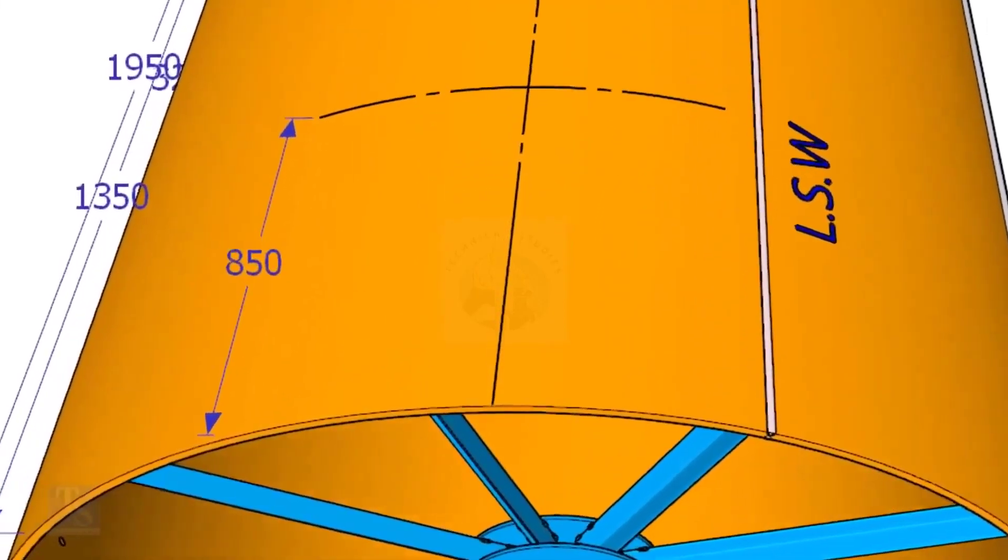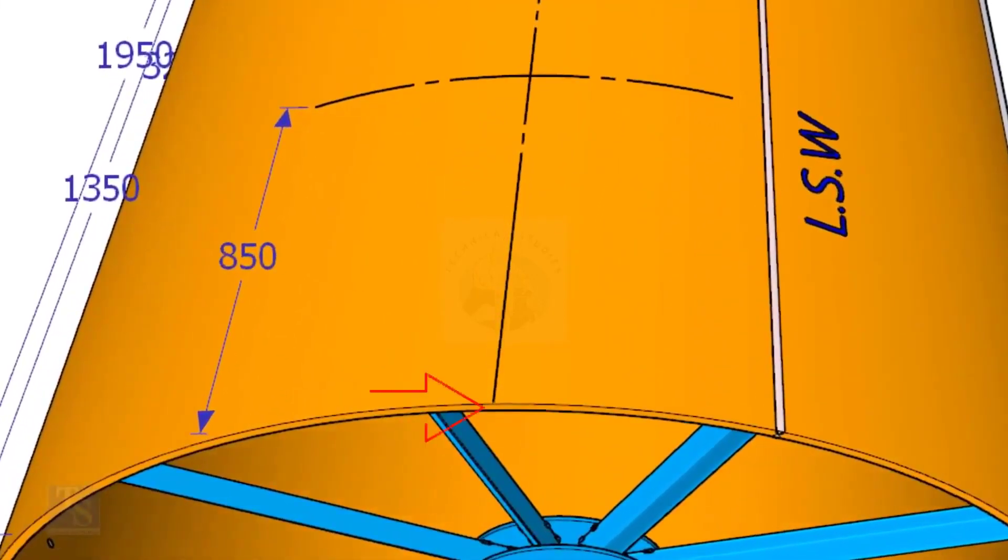Mark this distance on the end of the shell. Mark the same distance, roughly 850 millimeters away from the end of the shell, and draw a line.